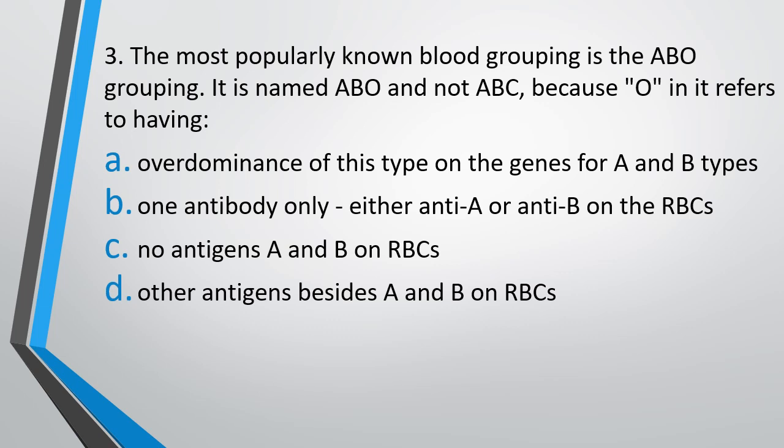Question number 3. The most popularly known blood grouping is ABO grouping. It is named ABO and not ABC because O in it refers to having: (A) over dominance of this type on the genes for A and B types, (B) one antibody only, either anti-A or anti-B on RBC, (C) no antigen A and B on RBC, or (D) other antigens beside A and B on RBC. The correct answer is option C — no antigens A and B on RBCs.